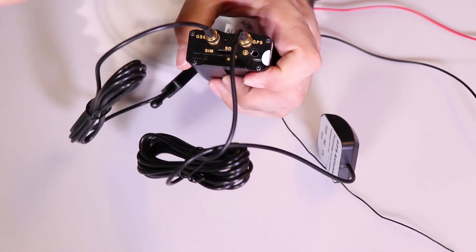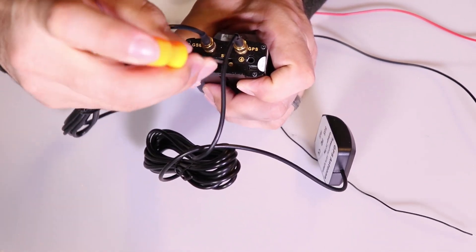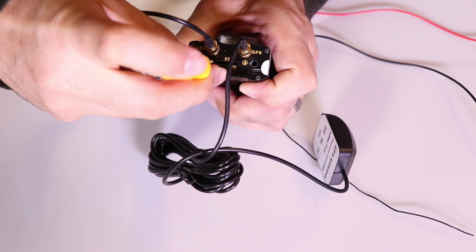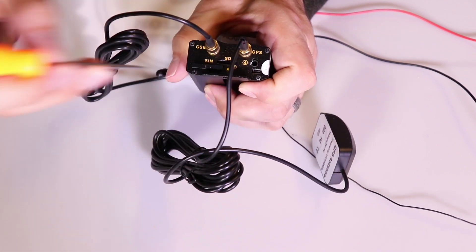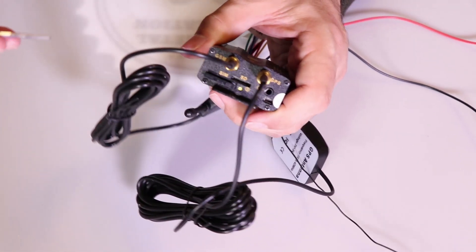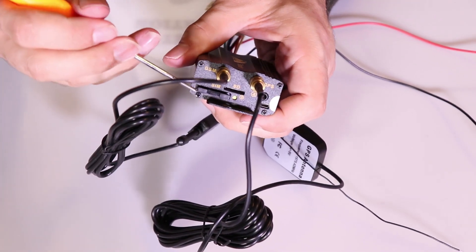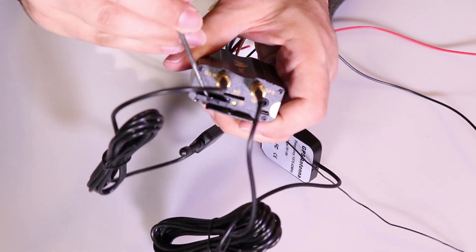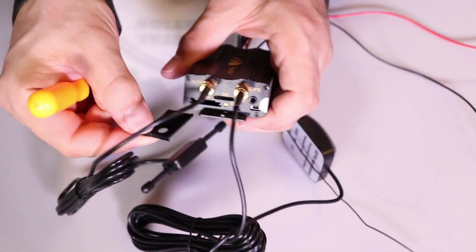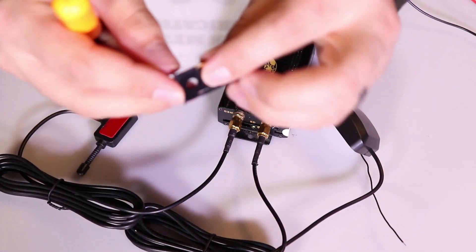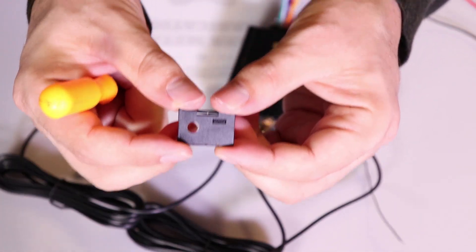All right, next you want to go ahead and pop out the GPS, or I'm sorry, the SIM. So there's a little button here to press that to make it come out. And you can use a paper clip if you don't have a pick. So here is where our SIM is going to go.